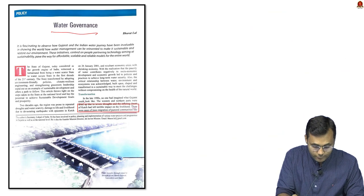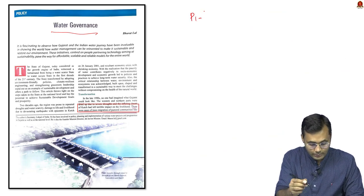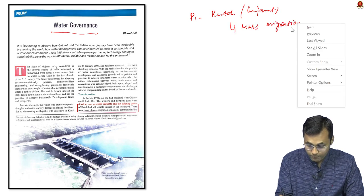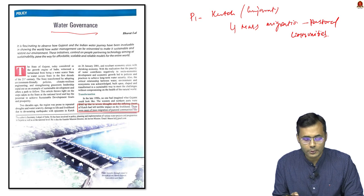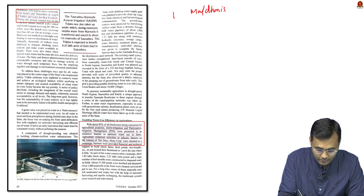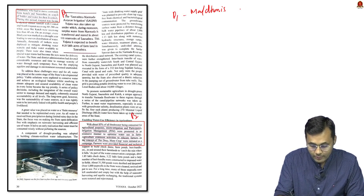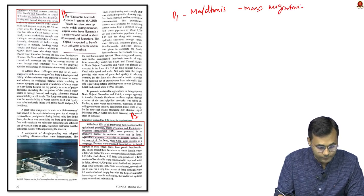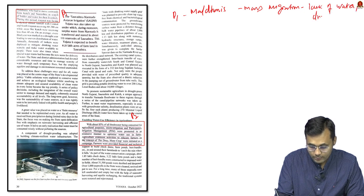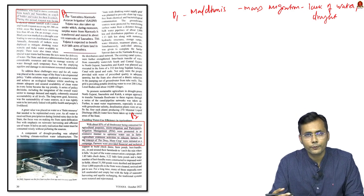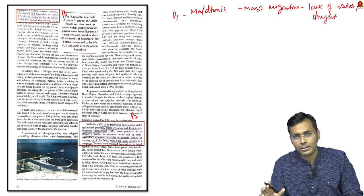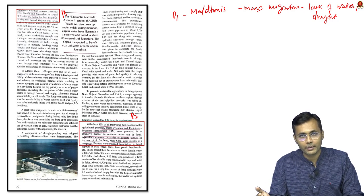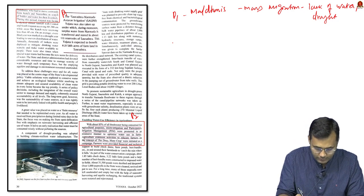The third article is Water Governance. Paragraph 1 gives a case study of Kutch in Gujarat, where there was mass migration of pastoral communities called Maldaris — communities that depend on cows and goats for their livelihood and graze across places. One major reason for this migration was lack of water or drought. This is a case study you can use for answer writing on questions regarding drought or desertification.